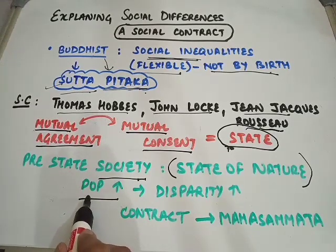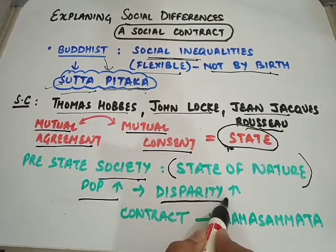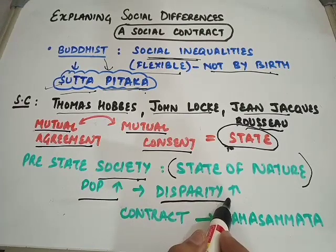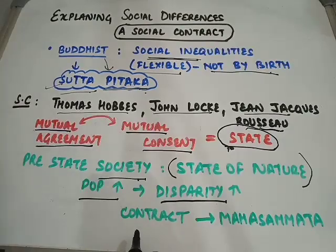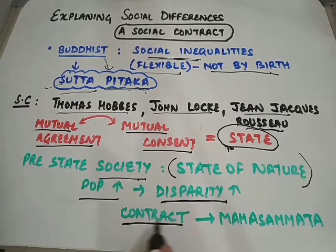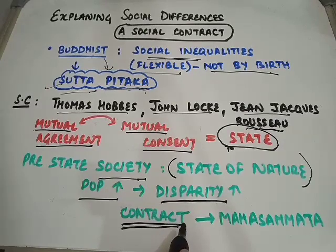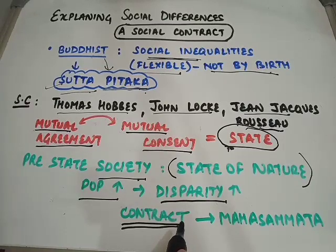The resources were limited, however the number of people started increasing. So the disparity among people started increasing. As problems increased, people decided to enter into a contract, and through this contract they elected a ruler. This ruler would ensure that laws are properly made and well implemented, so that everyone's life, liberty, and property in society is protected.